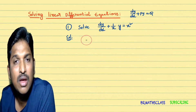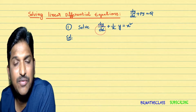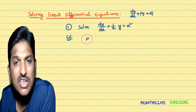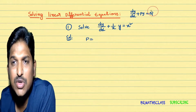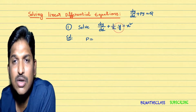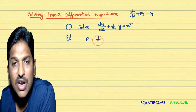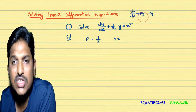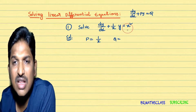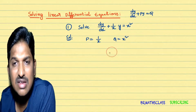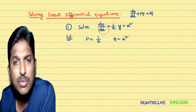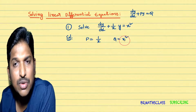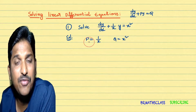Step 1 is identifying the functions p and q. p is the y coefficient — comparing with dy by dx plus py equal to q, p is 1 by x. What is q? After the equal sign is q. So q is x squared. From the given linear differential equation, we identified p and q. Step 1 is over.